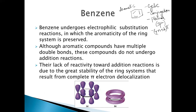Benzene is an aromatic compound, and the characteristic reactions of aromatic compounds like benzene are electrophilic substitution reactions. If you see, there are double bonds like in alkenes. The characteristic reactions of alkenes — since there is a double bond and it is rich in electrons — are electrophilic addition reactions.